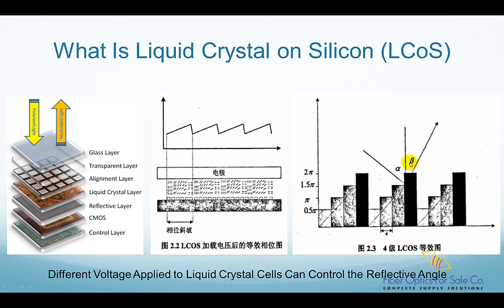Here, alpha is the incident angle and beta is the reflective angle. So by controlling the applied voltage patterns on multiple liquid crystal cells, we can control reflective angle beta. Each different angle beta corresponds to a particular output fiber port. This is the mechanism behind liquid crystal on silicon-based WSS switches.